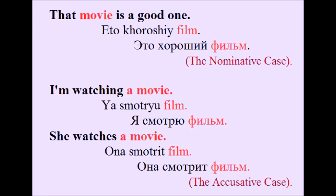Let's repeat the previous sentence. I'm watching a movie — я смотрю фильм. We can also say: she watches a movie — она смотрит фильм. In both sentences the word 'movie' is used in the accusative case. In the first sentence we ask 'what is it?' — it's a movie, we name the noun, so we use the nominative case. In the second sentence we ask 'what am I watching?' or 'what does she watch?' — so we use the accusative case.